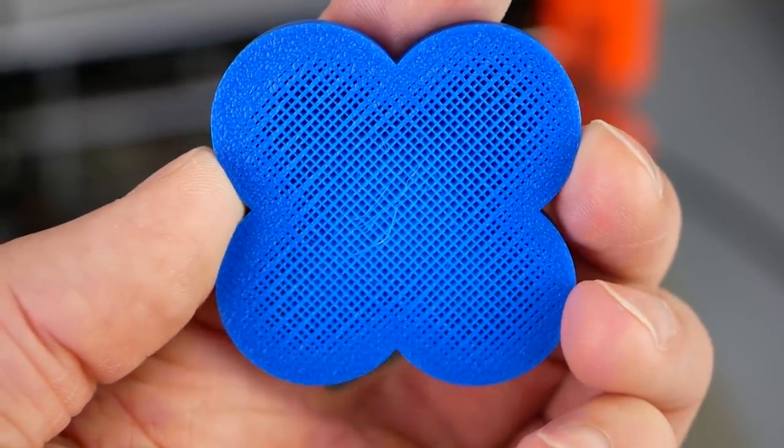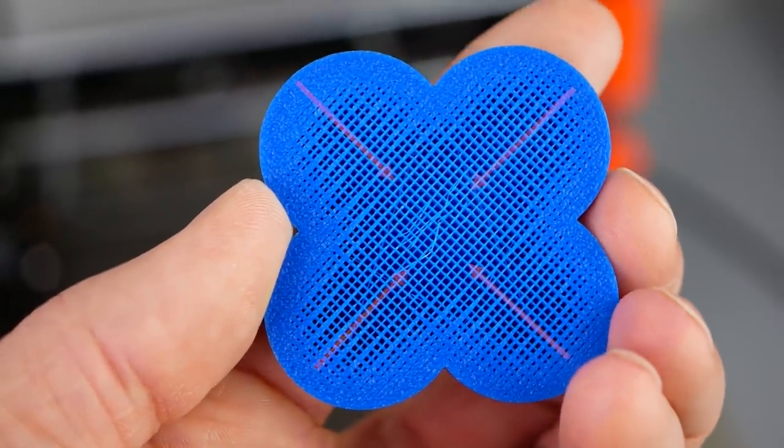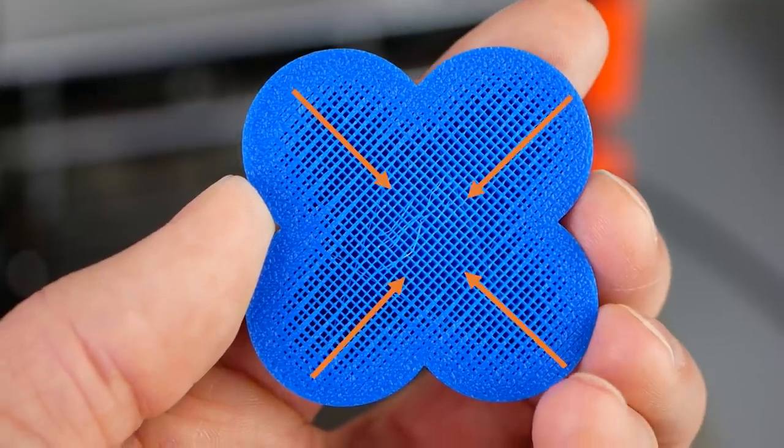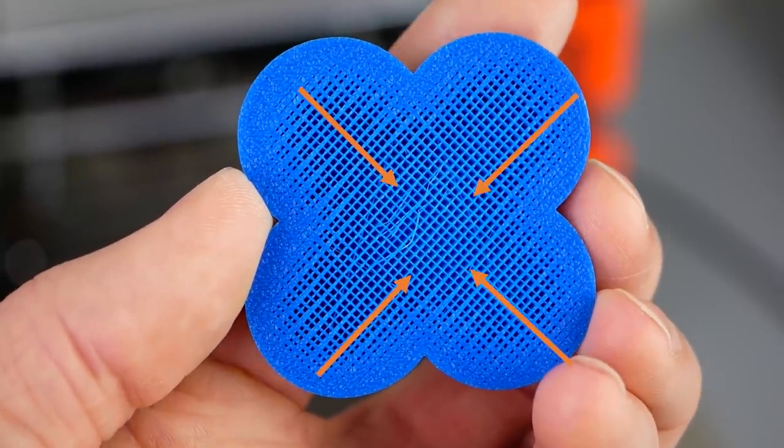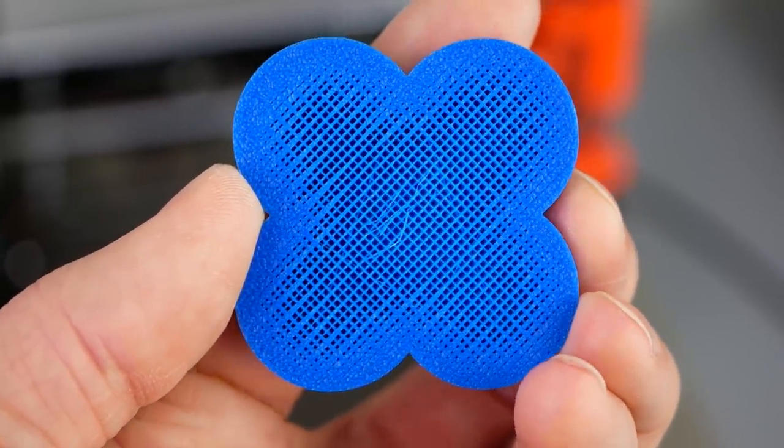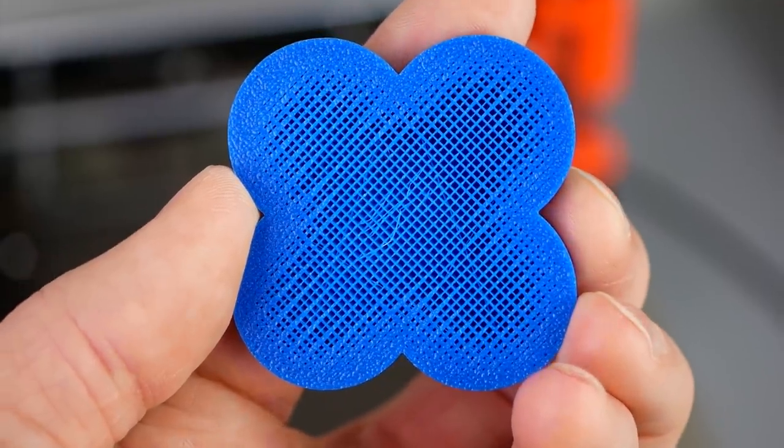What you can see right here is gradient infill, which means that you have a soft transition between the perimeters and the internal structure of your 3D print. As far as I know, this hasn't been done by anyone in that form before.